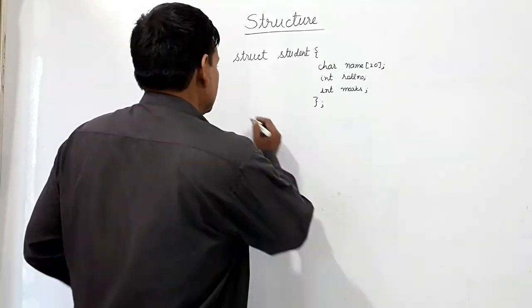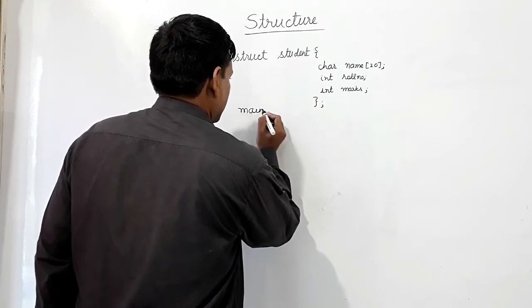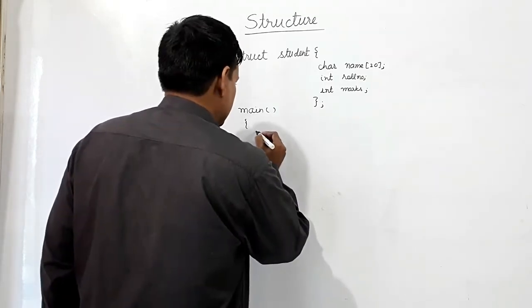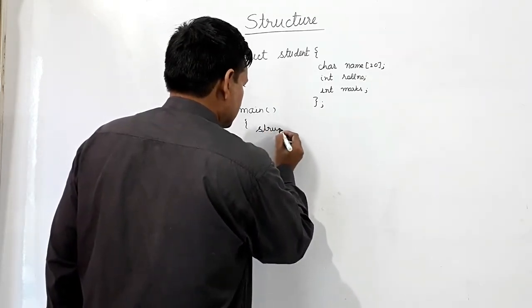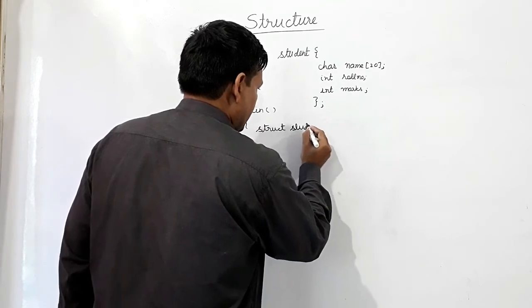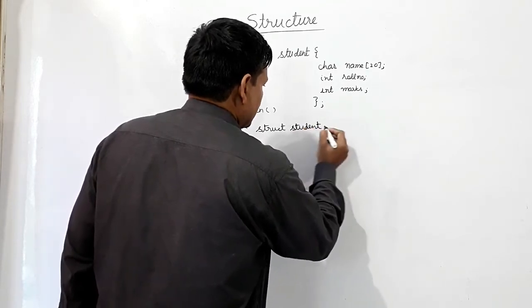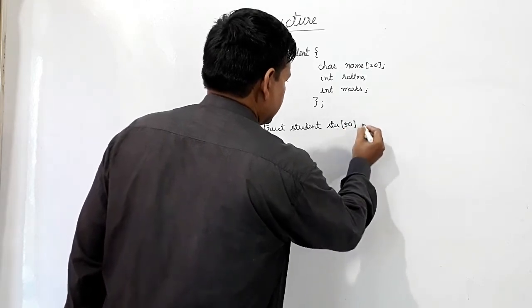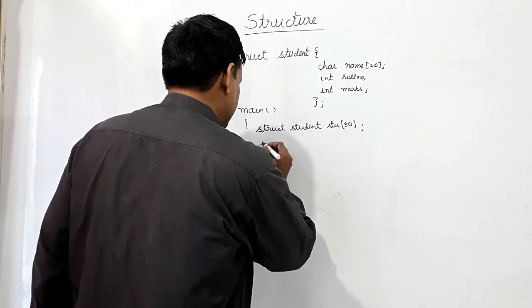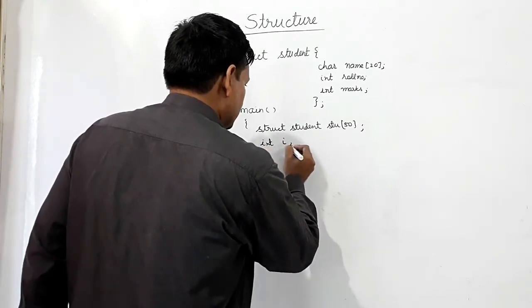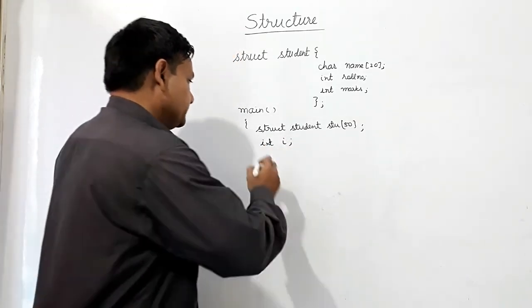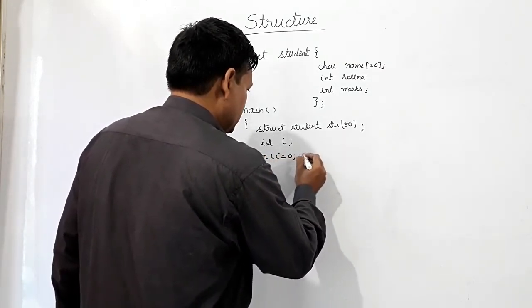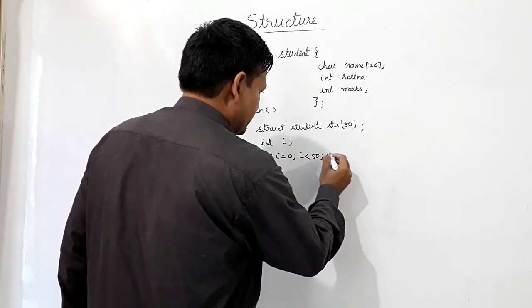So I will take, I will use this data type struct student stu - for example, 50 students are there. And I will use i for looping. Now, for i equal to 0, i less than 50, i plus plus.